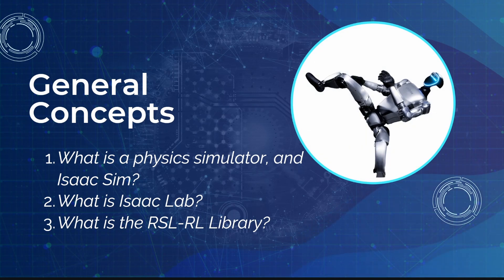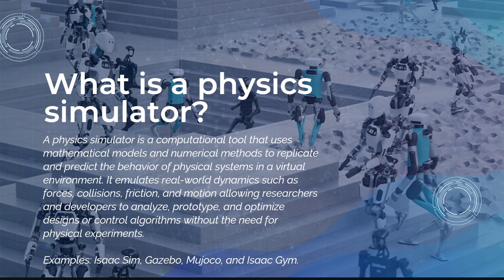We're going to talk about what a physics simulator is, introduce IsaacSim, IsaacLab, and the RSL-RL library. A physics simulator copies the real world so we can test our robots inside it easily. In reinforcement learning we need thousands of trials to optimize the policy, but doing that in real life risks damaging the robot. Resetting a physical environment also takes a lot of time, whereas in a computer program it's easy to reset without hurting the robot mechanically.